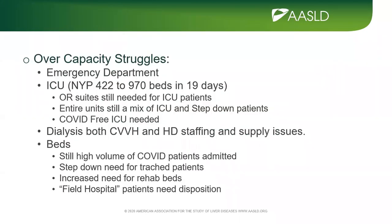Emergency rooms, once a place for rapid triage, are now generally split into four areas: known COVID-positive, non-COVID patients, patients awaiting COVID test results, and patients waiting for inpatient or ICU beds. ICU bed capacity has increased dramatically at all institutions — at New York-Presbyterian alone, system-wide, we went from 422 beds to 970 beds in 19 days. OR suites are still needed for ICU patients, and entire floor units remain a mix of step-down and ventilated ICU patients. Only recently were we able to free up one CT ICU to be a COVID-free multifunctional ICU.